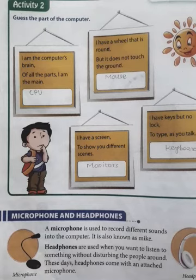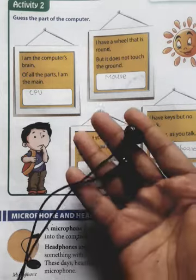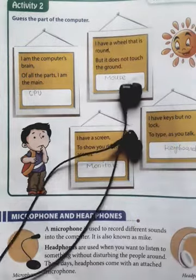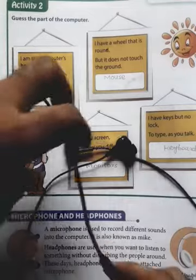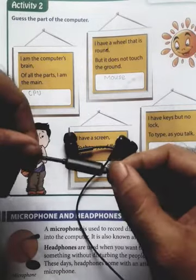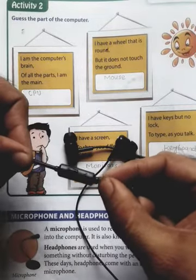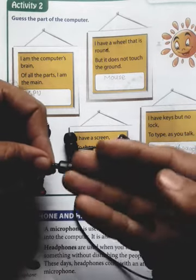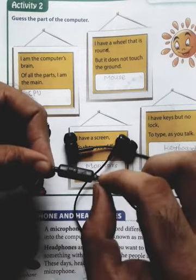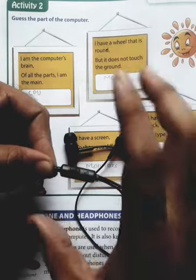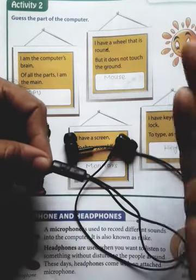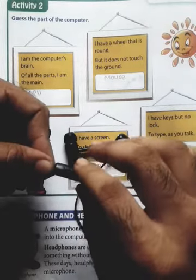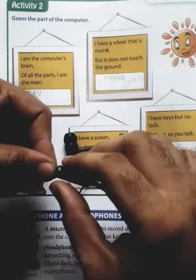Nowadays headphones are coming with a microphone. Let me show you — you can see these are my headphones. Now in this headphone, see, this is the mic or microphone. When you talk, your voice goes into the microphone and the receiver, or the person with whom you are talking, can listen to your voice.